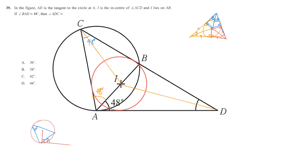Because of the in-center property, together with our target angle we have three angles summing to 180 degrees: 48 degrees, plus angle CAB (48 plus 48 degrees), plus the target angle ADC equals 180 degrees. So angle ADC equals 36 degrees.